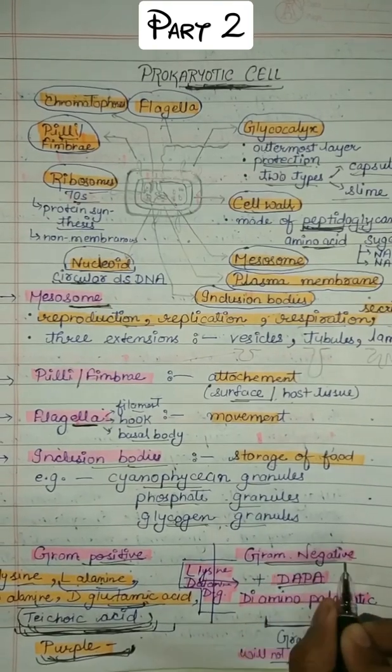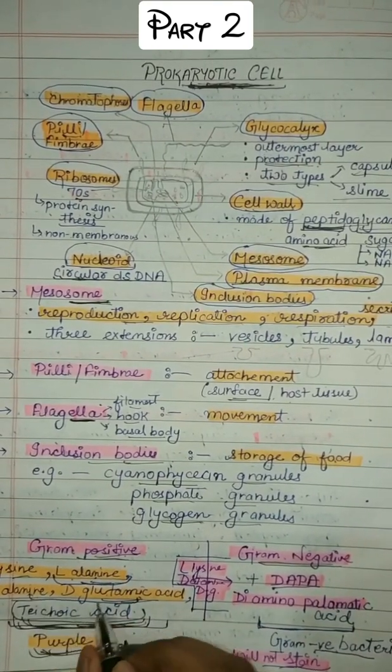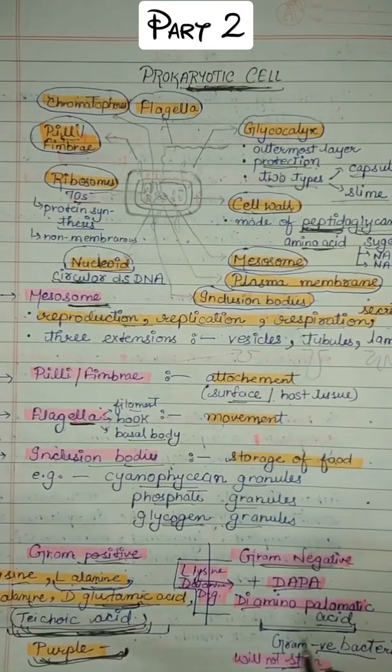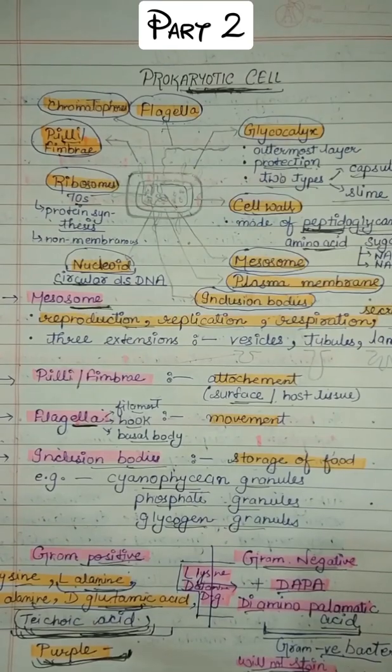But on the contrary, in gram-negative bacteria, these three components are present: L-alanine, D-alanine, and D-glutamic acid, along with DAPA, that is D-aminopimelic acid. There is no teichoic acid in gram-negative bacteria. That's why it will not stain and give purple color.